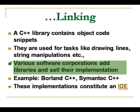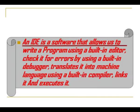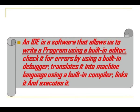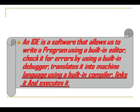Various software corporations add their own libraries. The first C++ that was introduced has far fewer features than what came after it. Each programmer tries to improve C++ by including more built-in functions — that is how C++ has evolved with implementations like Borland and Symantec. These implementations constitute what is called an IDE. An IDE is software that allows us to write a program using a built-in editor, check it for errors using a built-in debugger, translate it into machine code, and link and execute it. IDE stands for Integrated Development Environment.